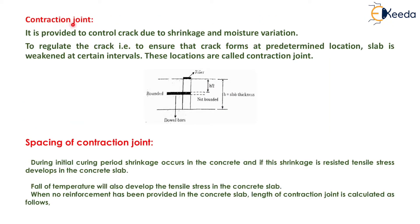Now, the next type of joint is the contraction joint. It is provided to control cracking due to shrinkage and moisture variation. To regulate the crack and ensure that cracks form at predetermined locations, the slab is weakened at certain intervals. These locations are called contraction joints.